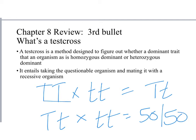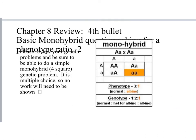Make sure you can do a basic monohybrid cross (four-square Punnett square) and give the phenotype ratio. There are two questions on this. It is multiple choice, so you can work it out on the side of your test.